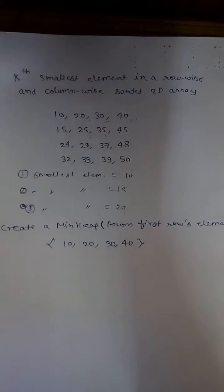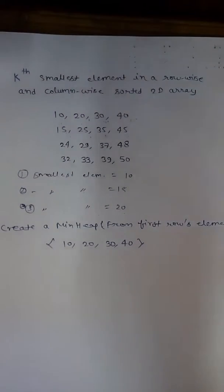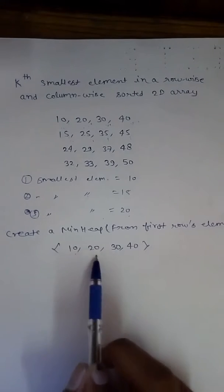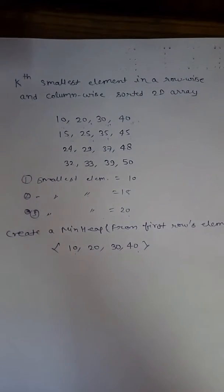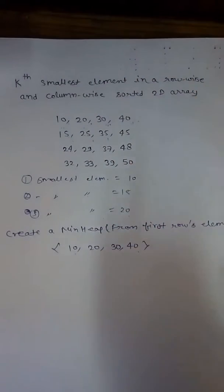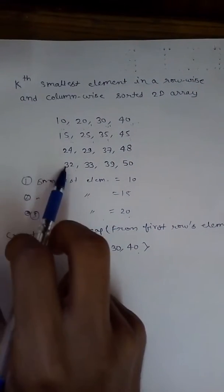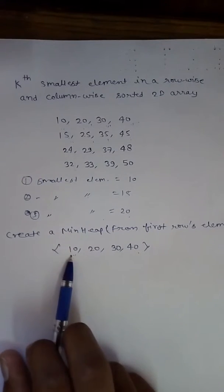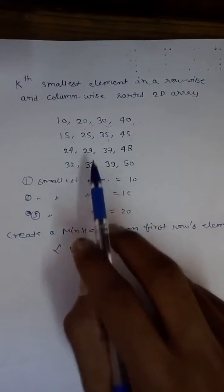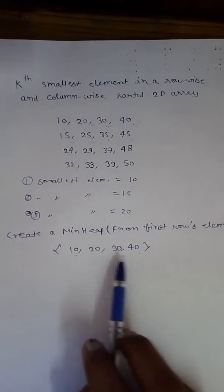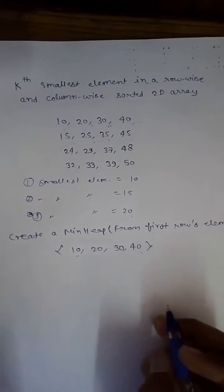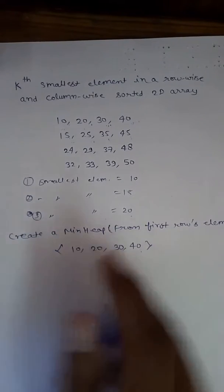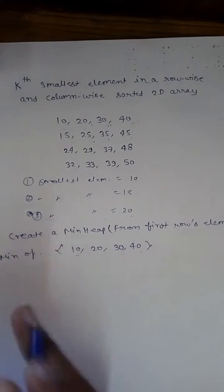We are going to use a min heap for this question. Initially, we insert the first row elements — 10, 20, 30, 40 — into the min heap. We insert the first row because 10 is the minimum in the first column, 20 is the minimum in the second column, 30 in the third, and 40 in the fourth. So we have the minimum of each column in the heap.